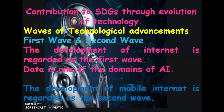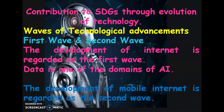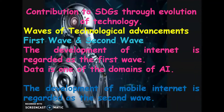The four waves are: first wave, second wave, third wave, and fourth wave. The development of the internet is regarded as the first wave. The internet is the backbone of AI technology in the sense that it allows for generation, collection, and use of data at an unprecedented rate. The development of mobile internet is regarded as the second wave, which shifted the focus towards real-time data across the world.